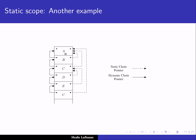We have activation records on the stack for A, B, C, D, E, and C. Notice that these activation records mirror the order of the calls. The function of the dynamic chain pointers was exactly to point from one activation record to the previous activation record. So if we follow the dynamic chain, we are following the order of the calls. But the static chain pointers represent something different — they represent the static nesting of the functions.